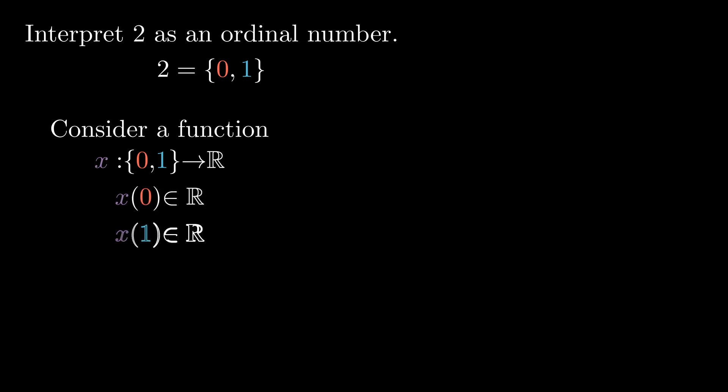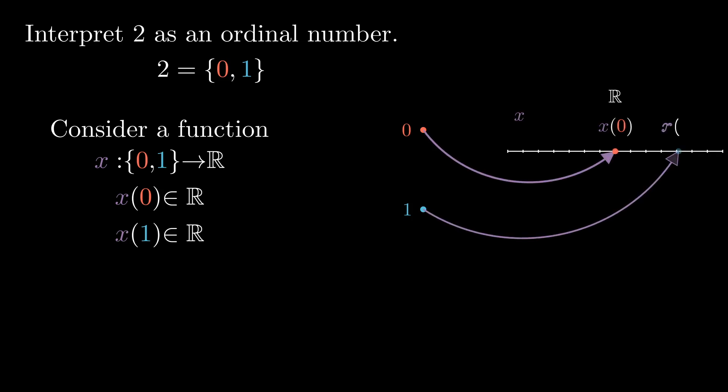Now consider a function x, where I input a number from my set 2, in other words 0 or 1, and it outputs a real number. So x is a function that sends 0 to some real number and sends 1 to some real number.